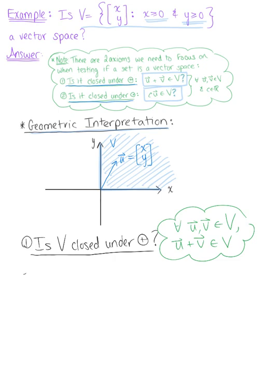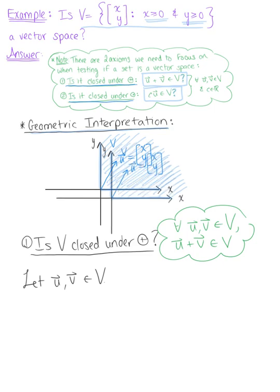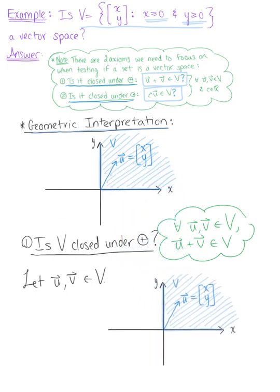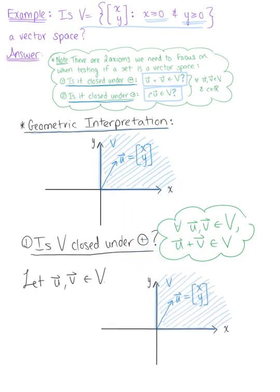So to begin, we'll just let u and v be two vectors in set V. And again, to get us started here, let's think about this geometrically. So we already have our vector u defined there, and we have also said that we're going to let vector v be some vector that also exists in this space. So here is vector v.